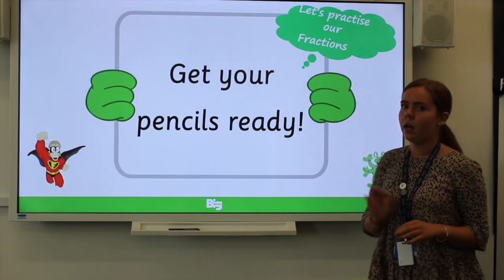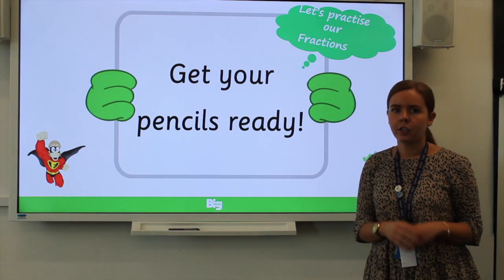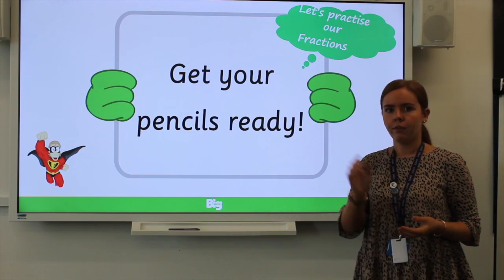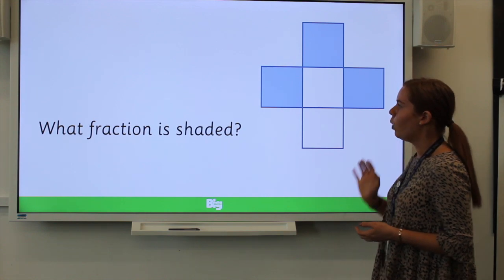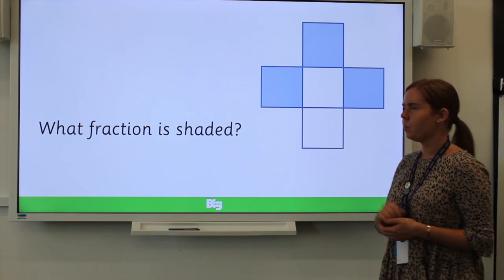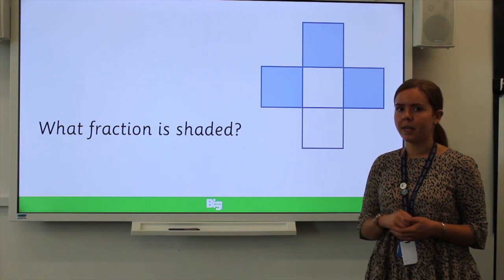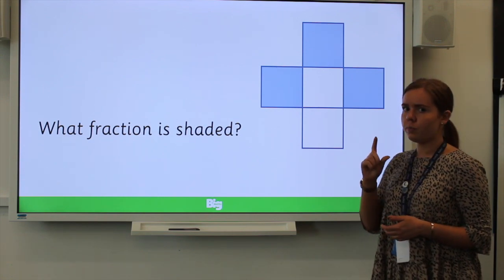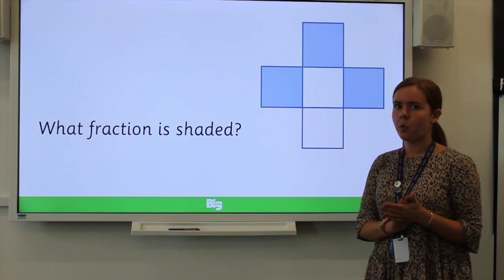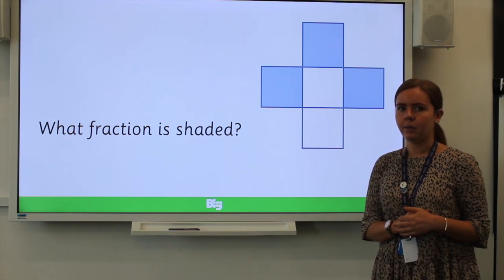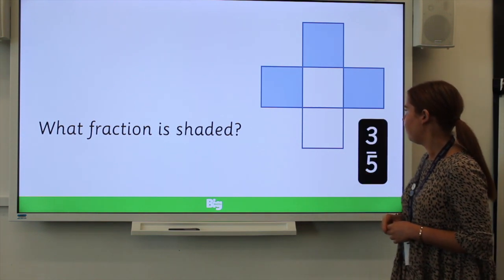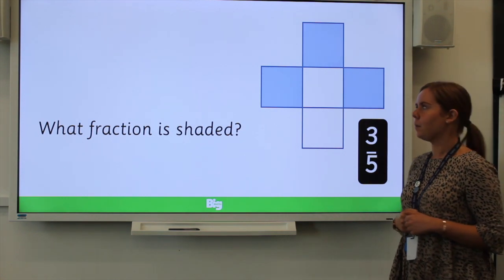I'd like you to get your pencils ready. We're going to practise our fractions — I'm going to show you the shaded fraction and I would like you to write down the fraction. What fraction of this shape is shaded? Remember, first count how many parts are altogether to find the denominator, and then to find the numerator — the top number — count how many parts are shaded. You might need to pause and have a think. If you said three-fifths, you were correct, well done.